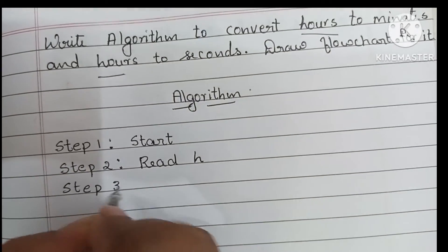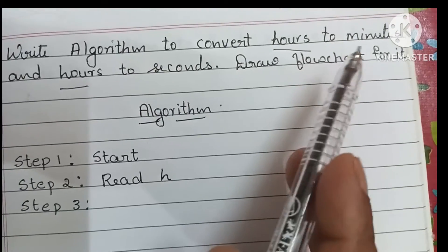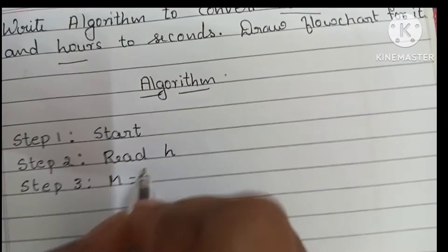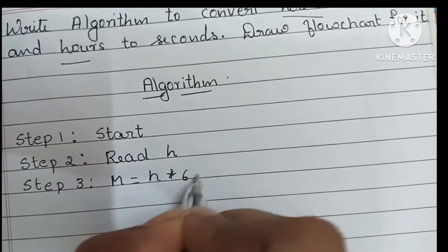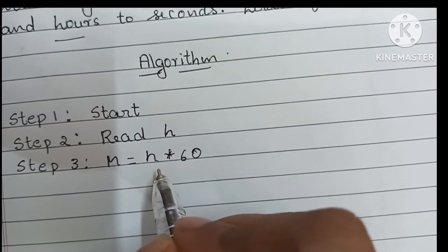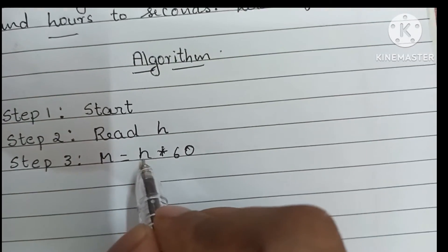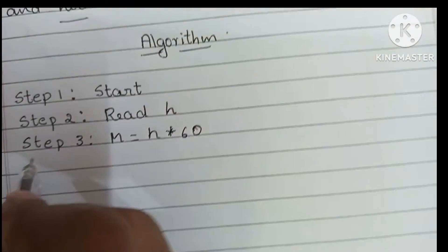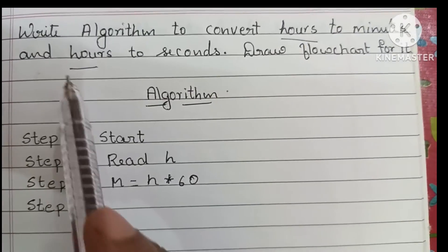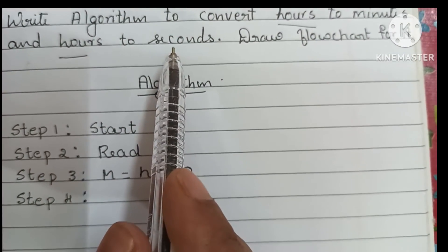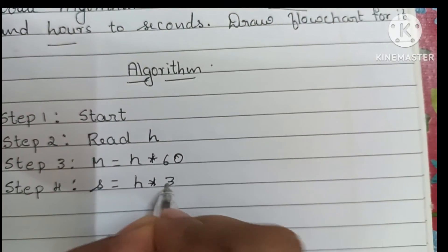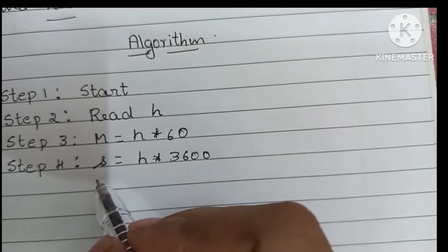In step 3 we have to calculate the process. Here we have to find hours to minutes, so m is equal to h into 60 — that is hours multiplied by 60. In step 4 we have to find hours to seconds format, so s is equal to h into 3600. To find the seconds format we multiply h by 3600.